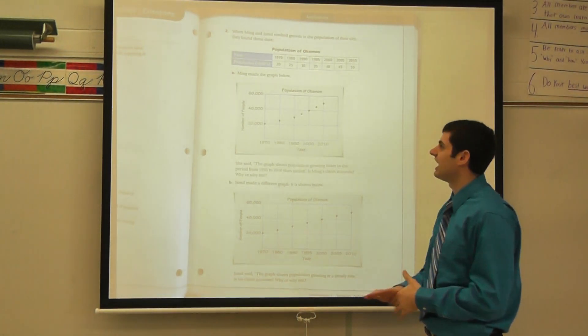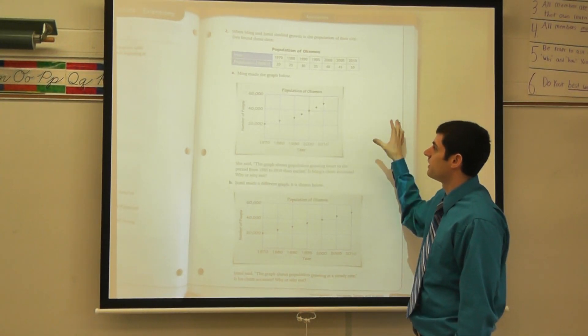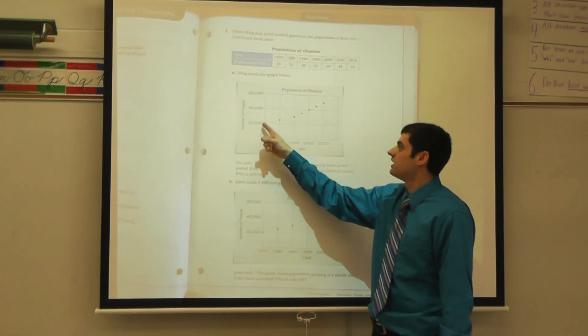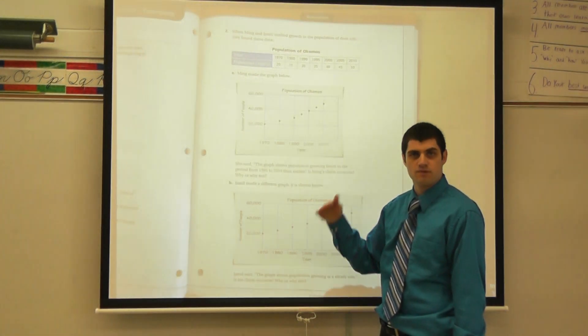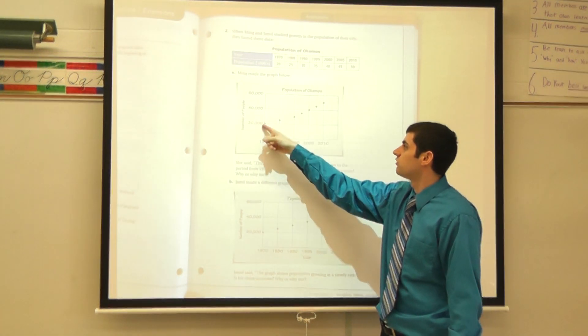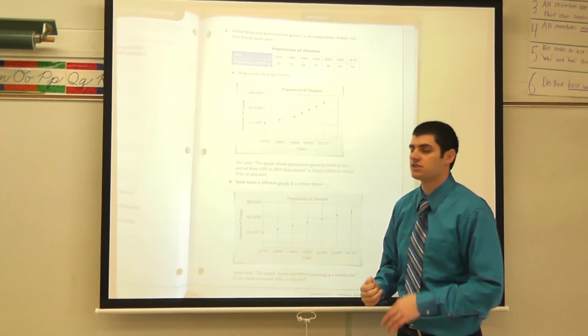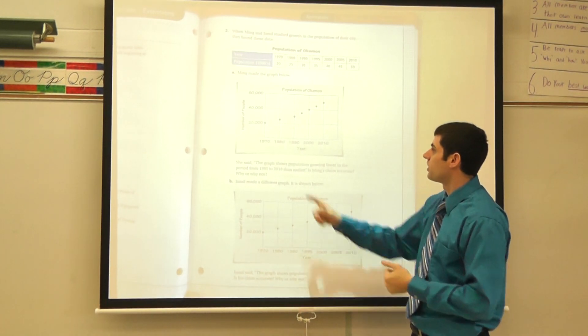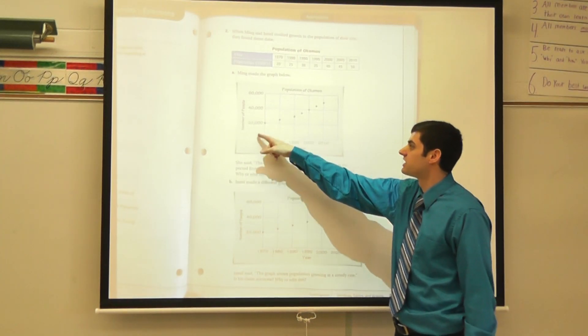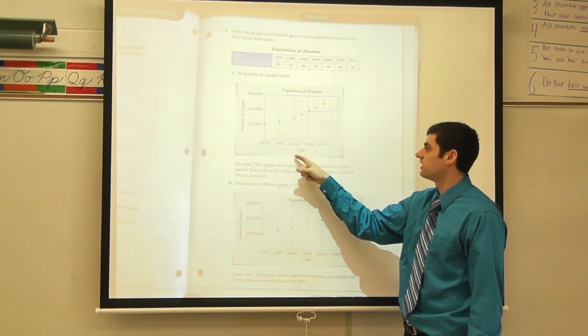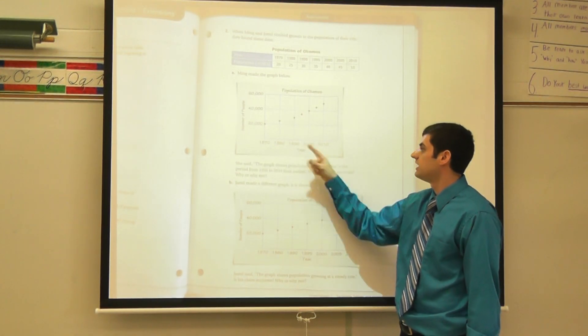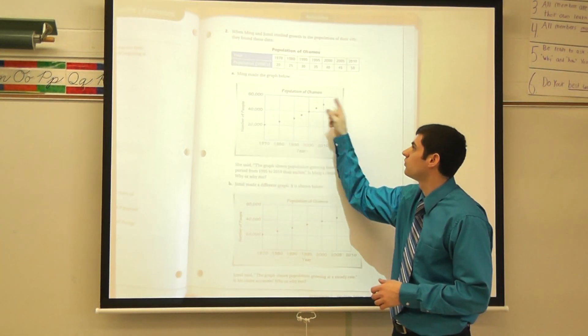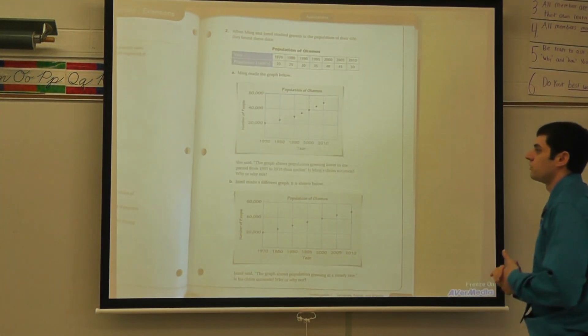So in A, this is what Ming came up with. She decided to make herself a chart. The year on the bottom, the number of people on the top. I can see her interval, again, how much is in between. 20,000, 40,000, 60,000. She has a 20,000 interval between each one of her points up there on what we call the Y axis. On the X axis down here, she's listed the year: 70, 1970, 80, 90, 2000, 2010. And then she's plotted her points where each of these would fit.